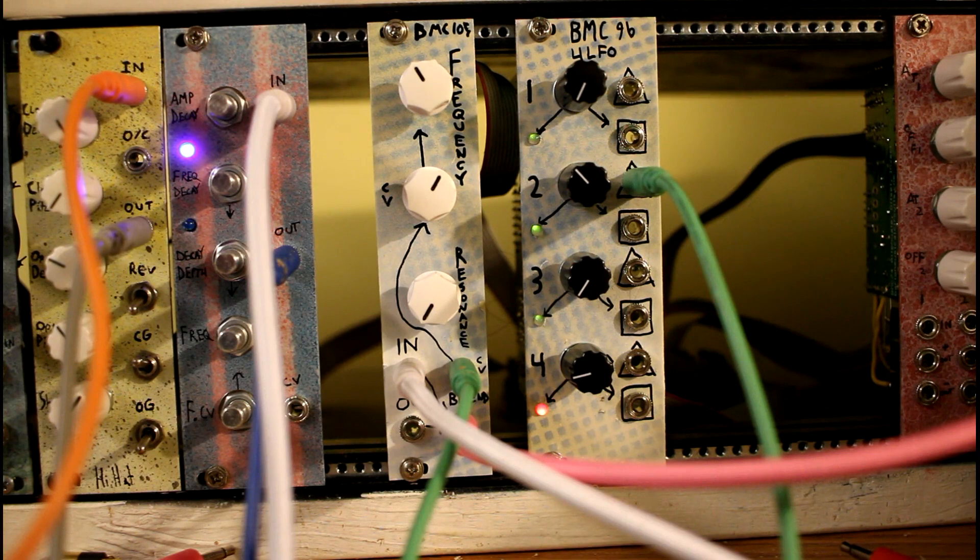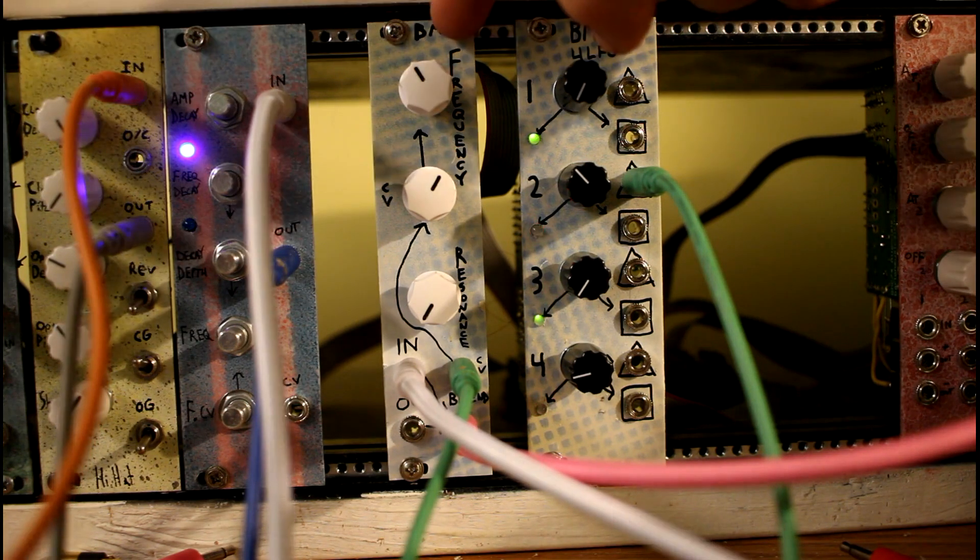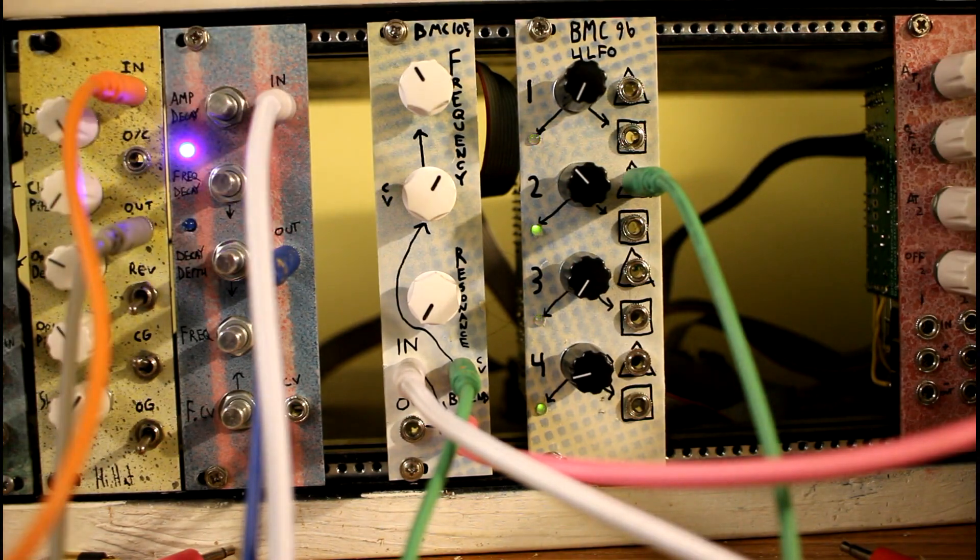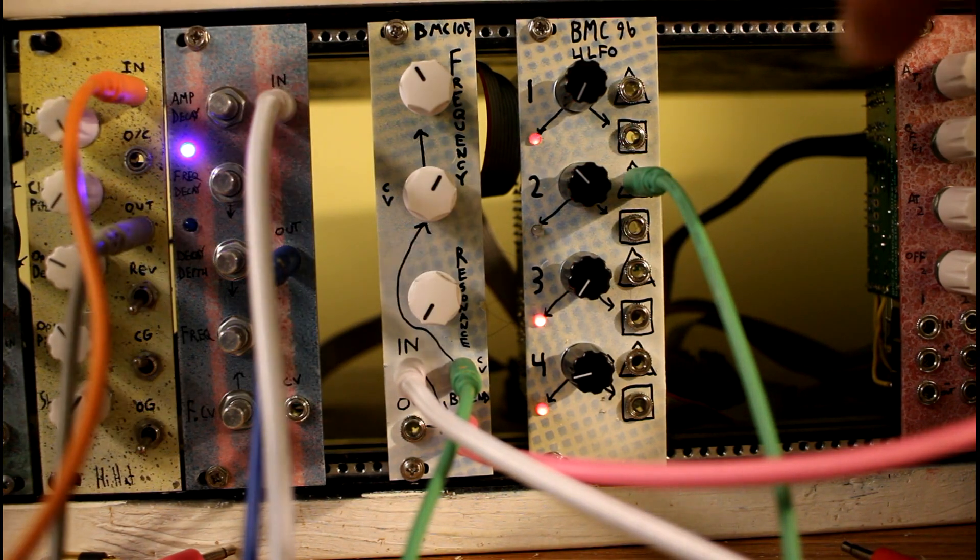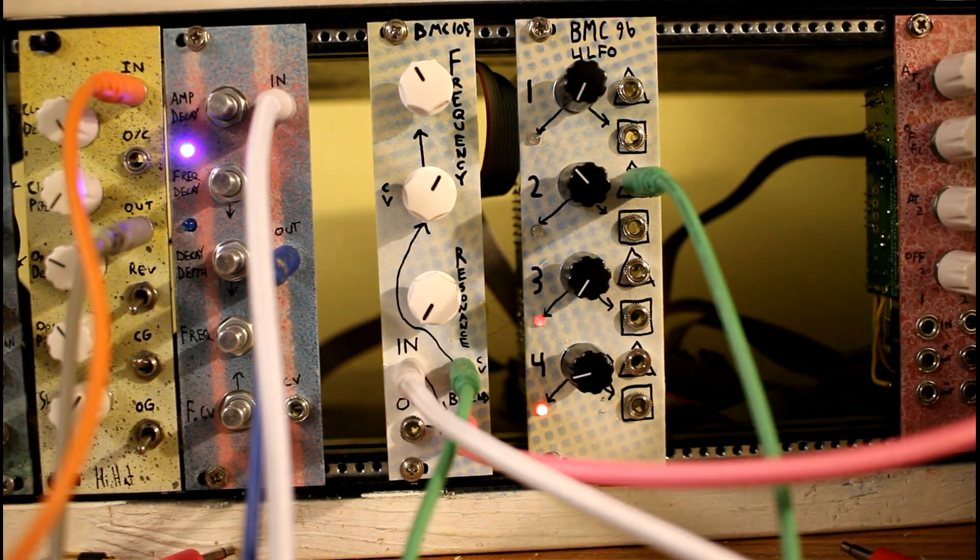Hey, everybody. This is Michael from Barton Musical Circuits. Right now you're listening to the BMC 105 12-stage phaser. It's processing a kick and a snare kind of sound coming from the analog drum and the digital hi-hats. And it's being modulated by the new BMC 96-4 LFO.